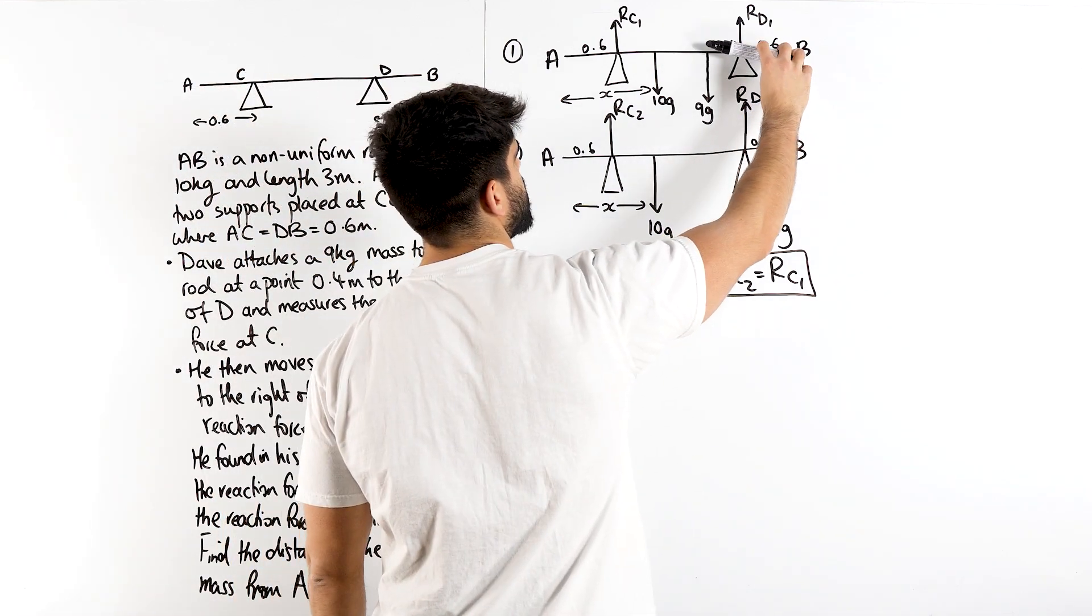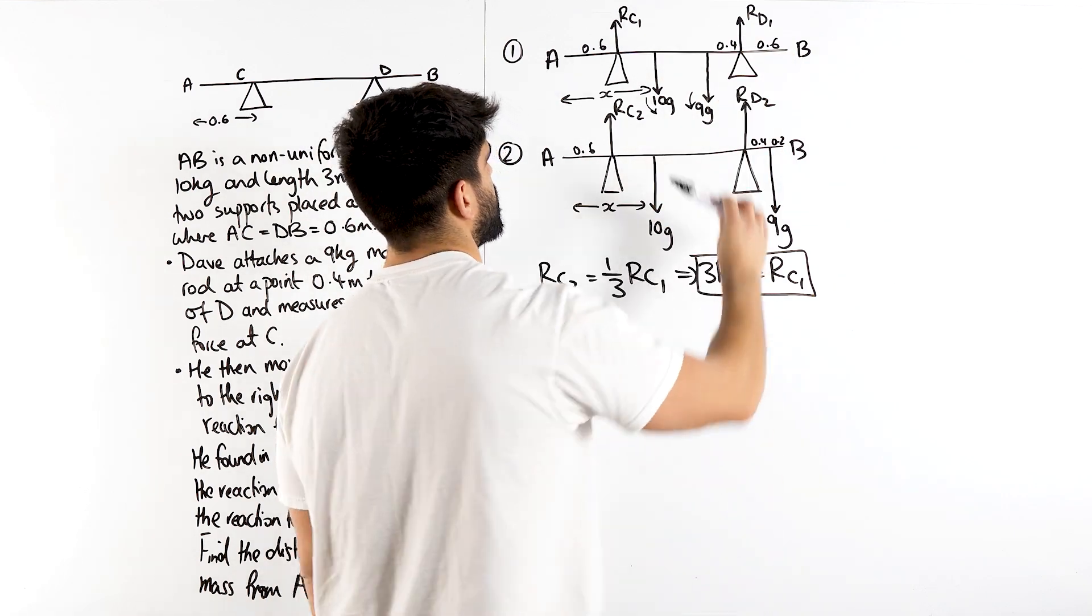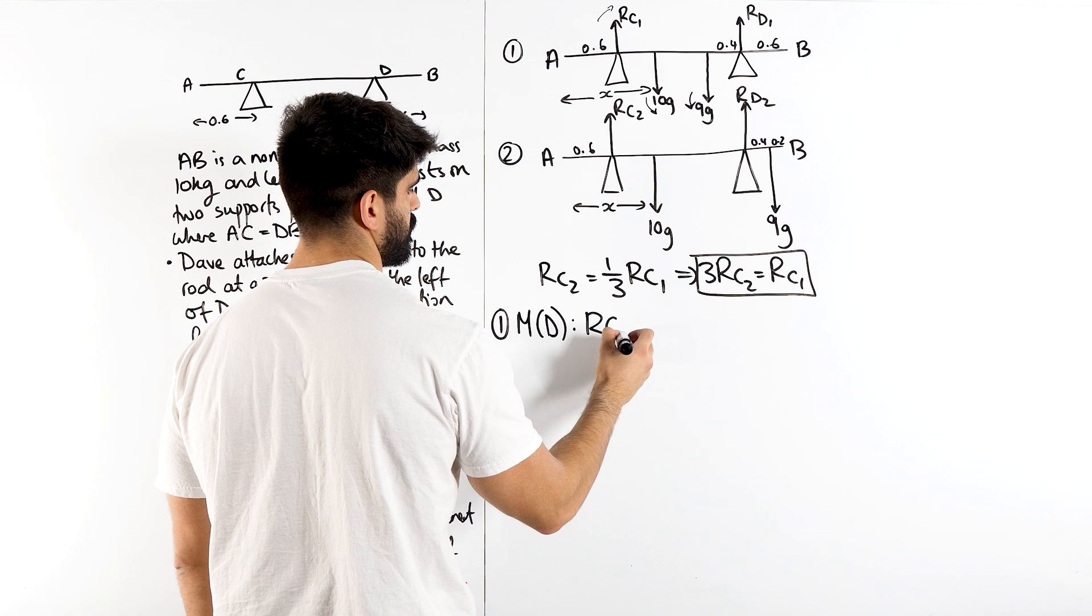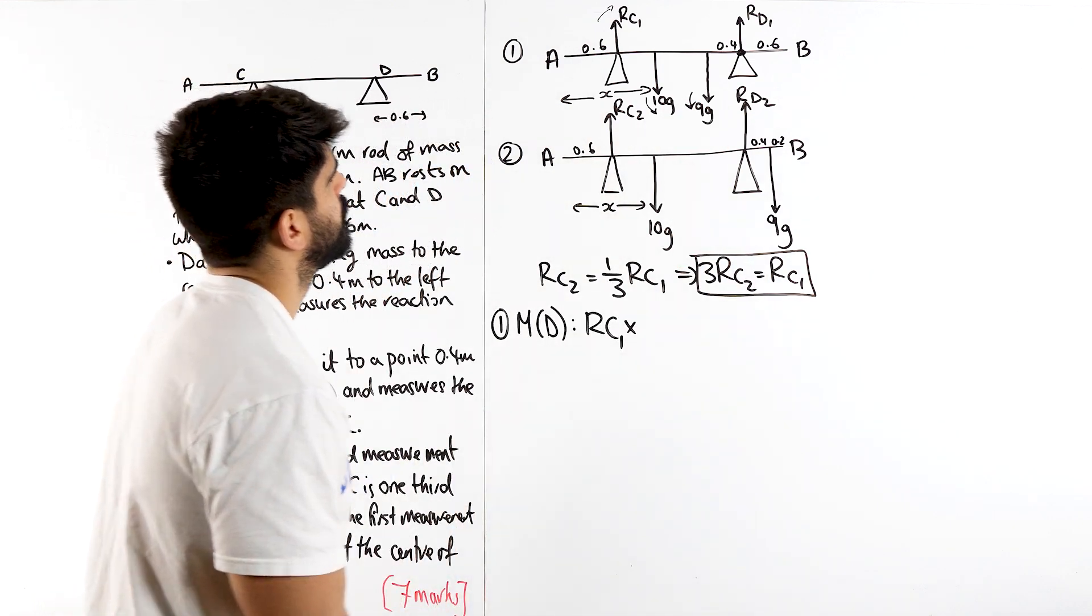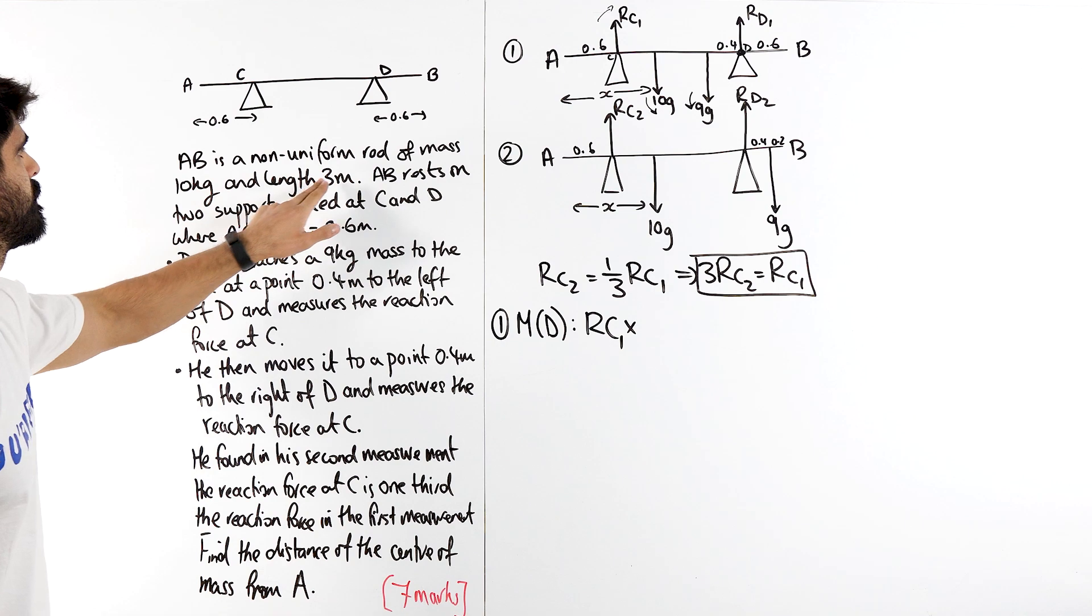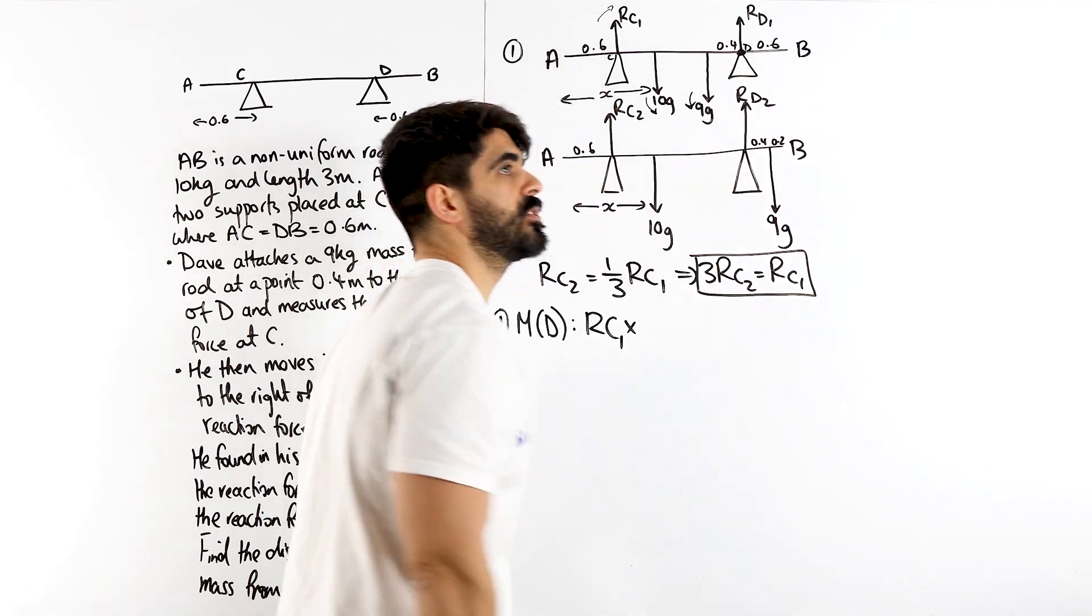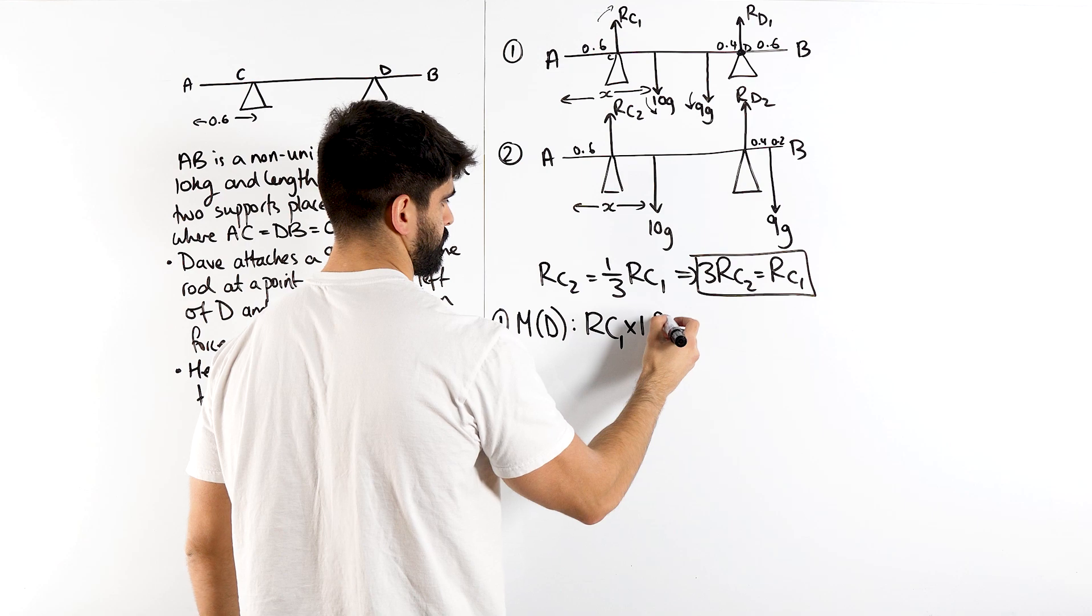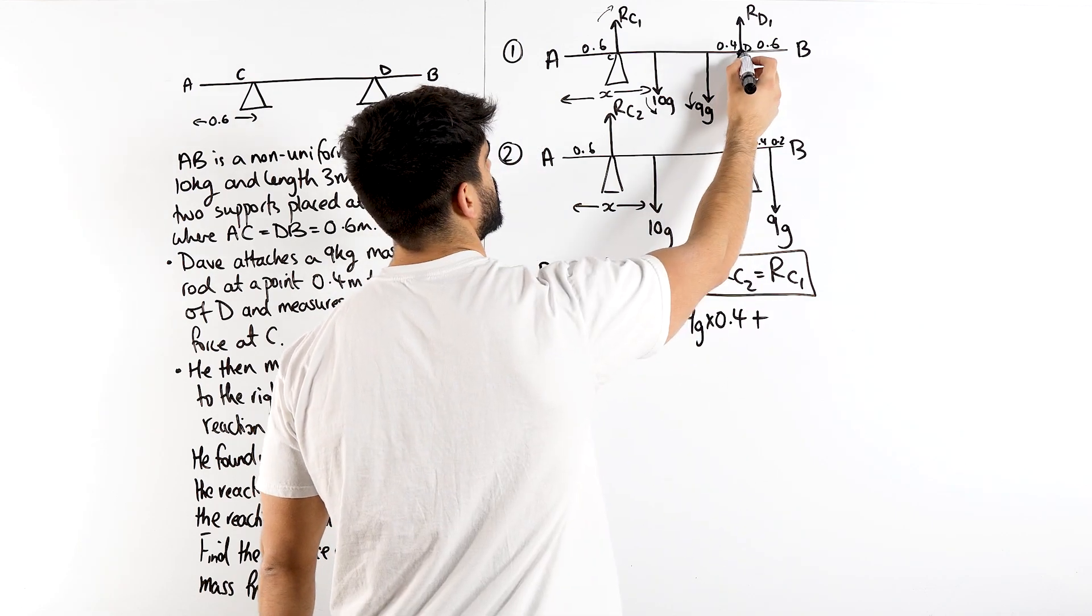Now if we take moments from D, this 9G is going to be anti-clockwise and this 10G is also anti-clockwise. So both of these downward forces are anti-clockwise and the RC1 is clockwise. Okay, so let's do the clockwise one first. So RC1 force times this perpendicular distance from where we're taking moments from. What is that? Well, we just need this distance here between C and D. Well, they told us in the question that the length of the plank is 3. So we have 3 minus 1.2, we're minusing 0.6 from both sides. 3 minus 1.2 is 1.8. So 1.8 equals 0.4 times 9G, and what are we doing? This 10G.